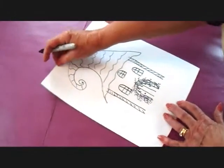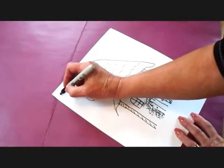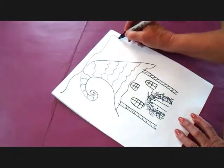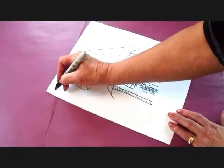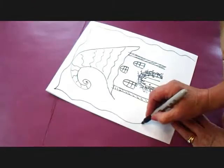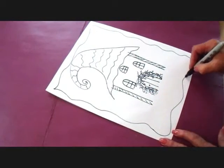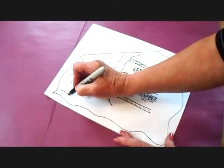I'm going to do a border all the way around, so I'm just going to make a wavy line all the way around my page, and then I'm going to do another one on the inside.